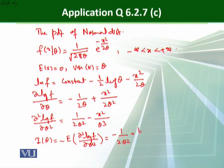plus expected value of x square over 2 theta square. And we also know that the expected value of x square, that is equal to theta, because the expected value of x is zero. So this expected value is theta,